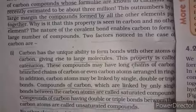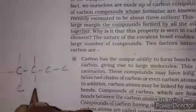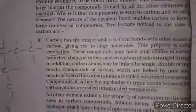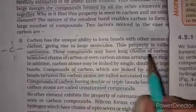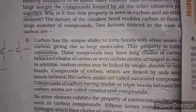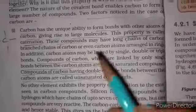Catenation is the self-linking power of atoms — the ability to form covalent bonds with atoms of the same element. Carbon can form bonds with other carbon atoms. These compounds may have long chains of carbon, branched chains, or carbon atoms arranged in rings.